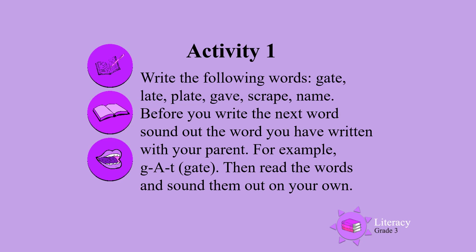Before you write the next word, sound out the word with your parents that you have written. For example, g-a-te. Gate. Remember, the silent E makes the vowel say its name — the E sound says A. Late. L-a-te. Late. Remember, the silent E makes the E say A. Then read the words and sound them out on your own.